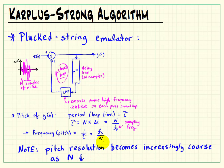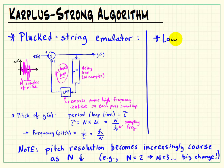Another issue has to do with pitch resolution. It becomes increasingly coarse as the value of N gets smaller. A change from 2 to 3 is fairly significant in terms of frequency compared to a change from 200 to 201.